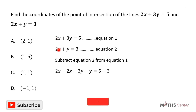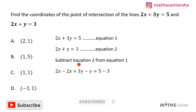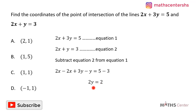Subtracting equation 2 from equation 1: 2x minus 2x plus 3y minus y equals 5 minus 3. 2x minus 2x gives 0, 3y minus y gives 2y, and 5 minus 3 gives 2. To get y, I'll divide both sides by 2, so y equals 2 divided by 2, which gives us 1.